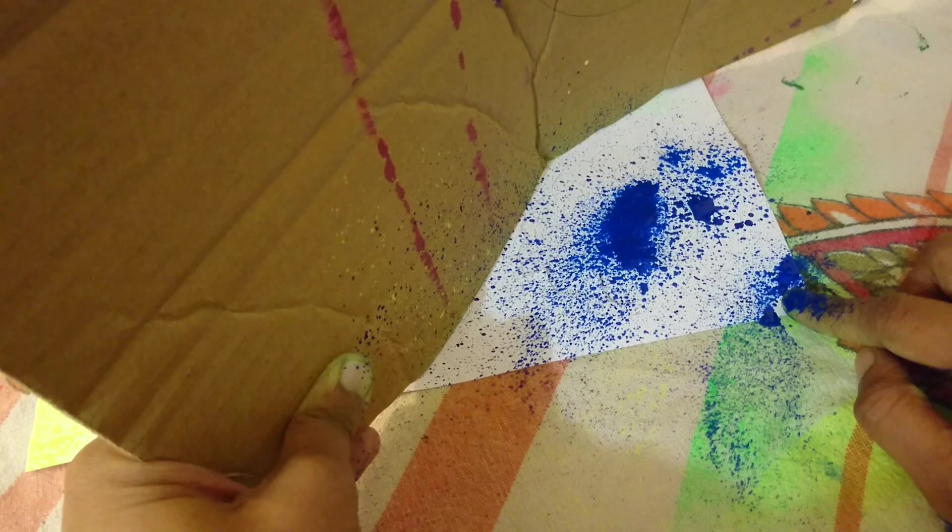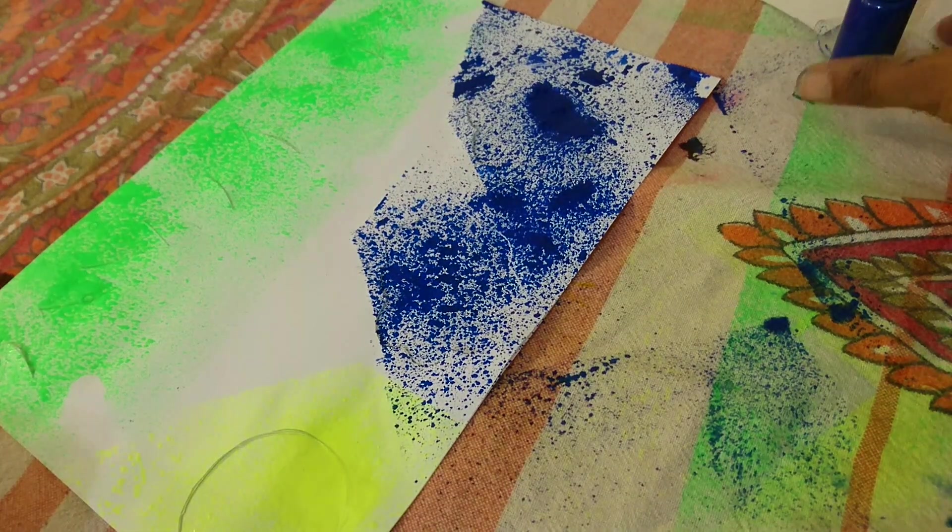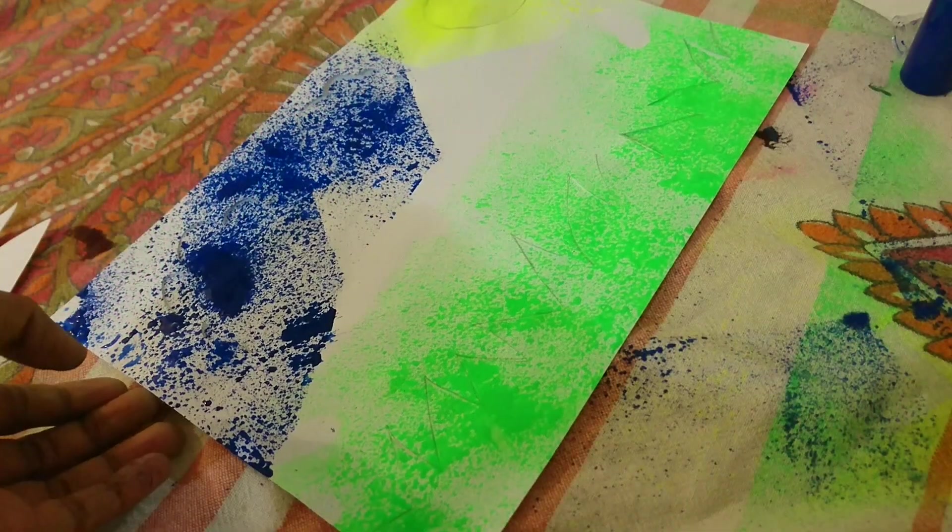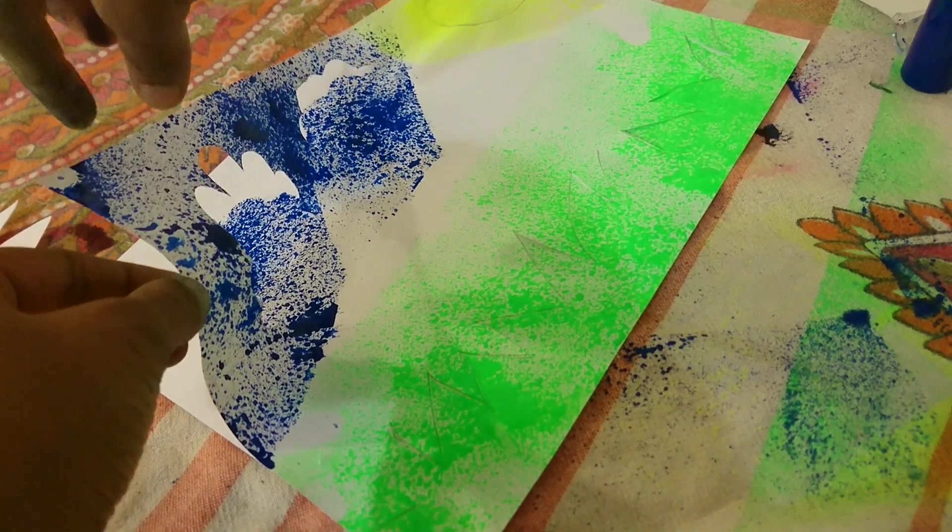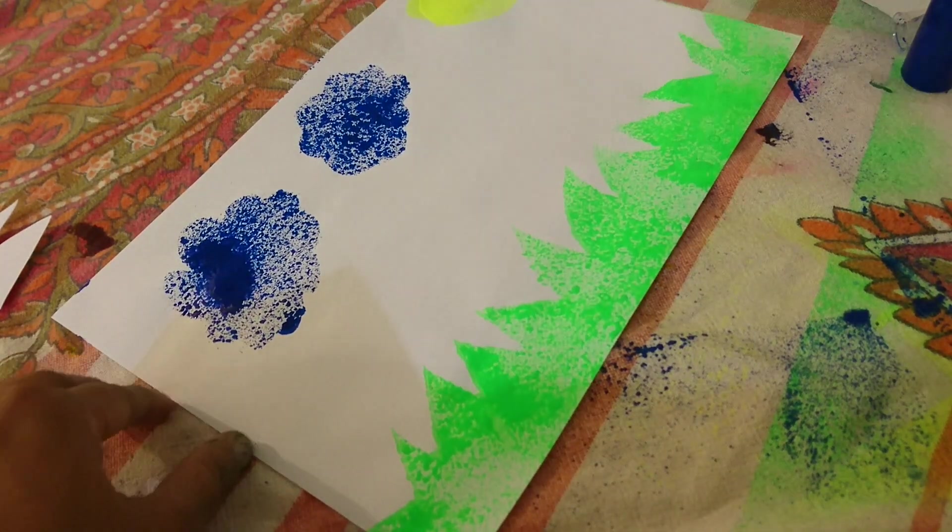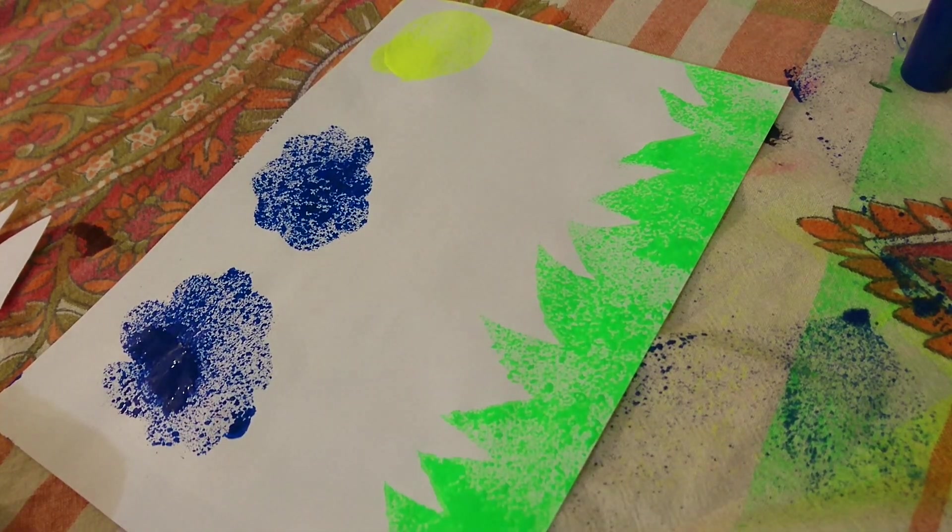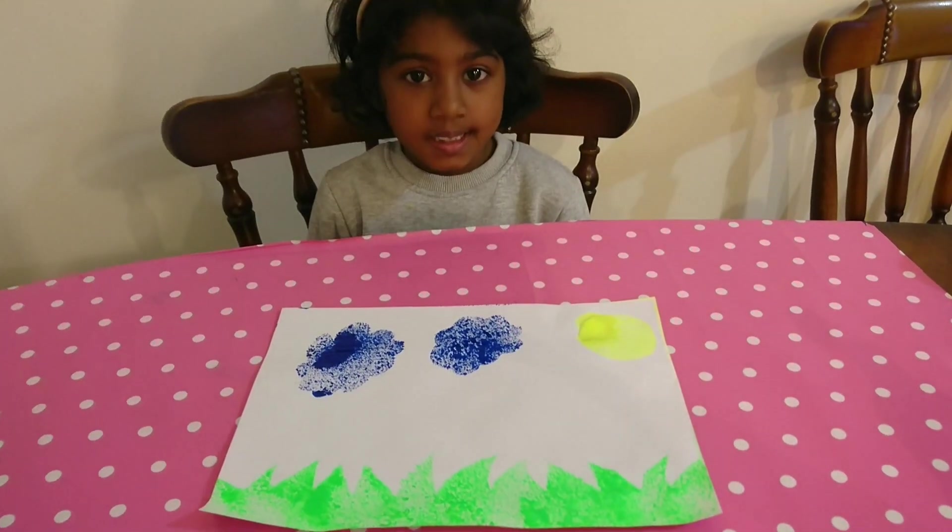Now, spray painting can also be done using leaves. All you have to do is place a leaf onto a paper and spray over it. You will get a nice pattern. Once all the spraying is over, I am gently removing the stencil. And there you go, our nature spray painting is ready.